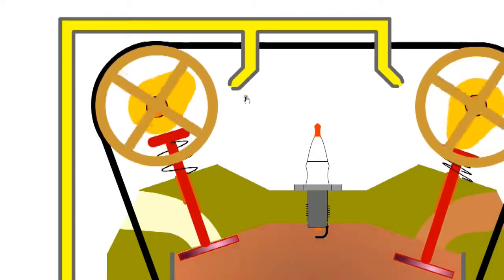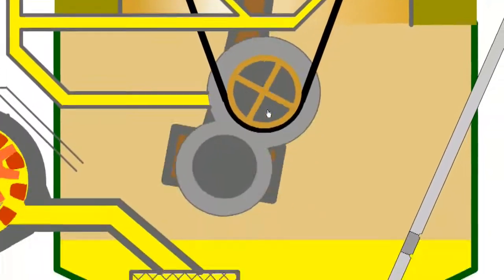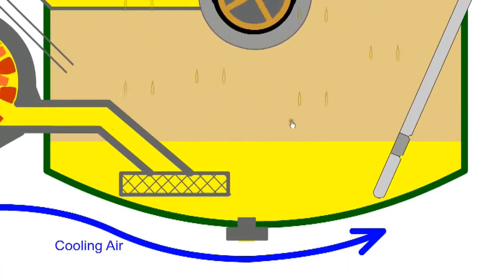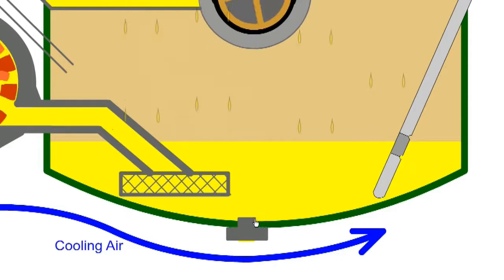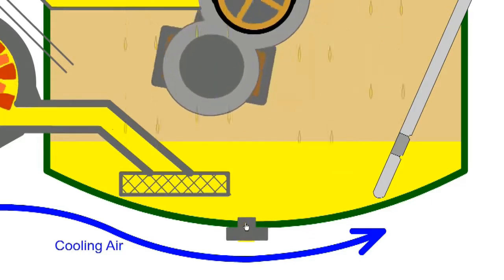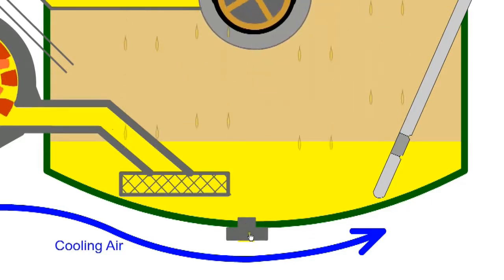When the oil has completed its work, it drains by gravity back to the sump where the heat is dissipated to the surrounding air. Any metal particles in the oil will be deposited at the bottom of the sump where they will be attracted to the magnetic drain plug.